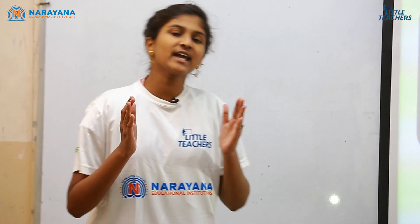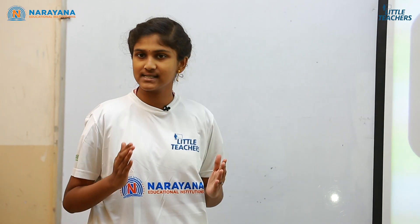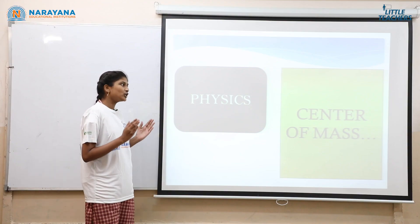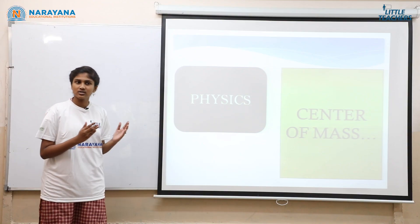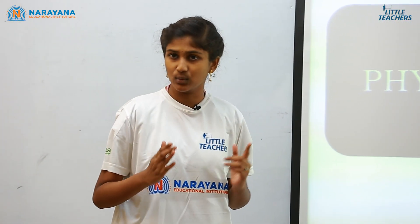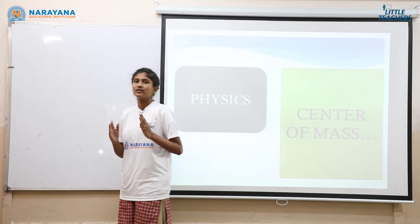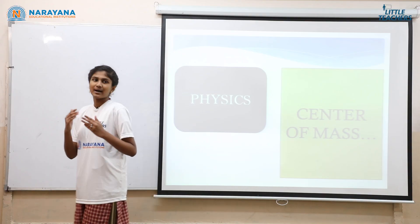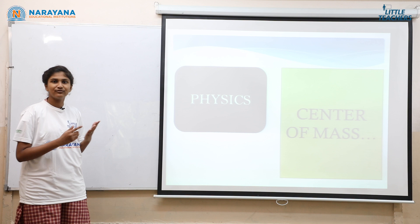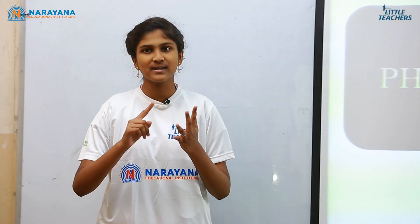First of all, if we take any object it will have n number of particles in it. So if we want to apply a force on it, we should apply a force on n number of particles too. If the forces on the particles are considered as F, then the forces we should apply are F1, F2, and F3. So the total force is nothing but F1 plus F2 plus F3 and so on.